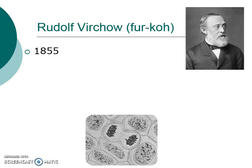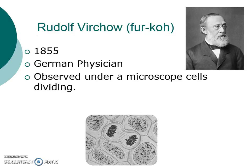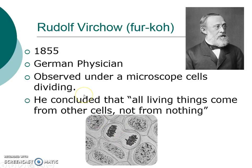Then came along a guy by the name of Rudolf Virchow — that's how you pronounce that. It was 1855; he was a German physician. He observed under a microscope cells that were dividing, just like that. He saw that as they pulled apart, they created new cells, and he concluded that all living things must come from other cells — not from nothing. So they're coming from cells that keep dividing. This kind of helps set up our current modern-day cell theory.